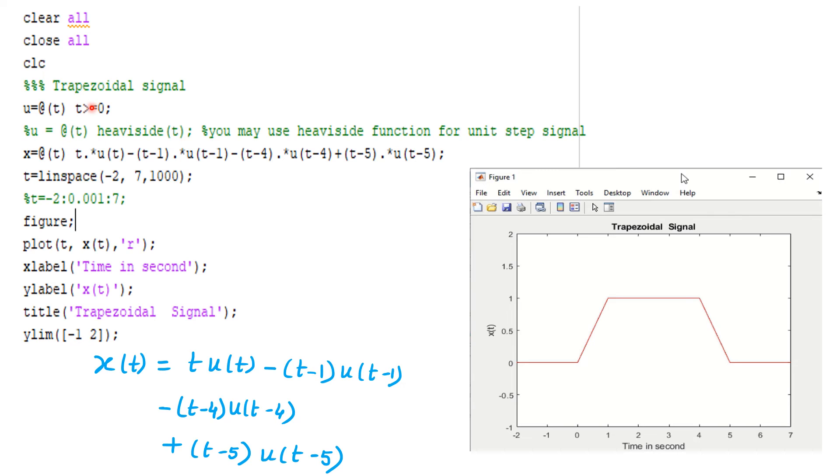But as these are usual notation u, we can write in this way, anyone you can use either this or this one. And then once this u(t) is defined, now we can define our signal x(t). So here u(t) is already there, so we can write x = @t, t .* u(t), this first component t times u(t).